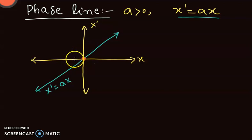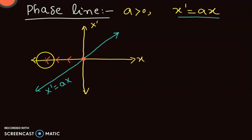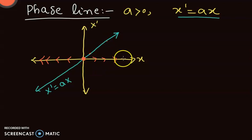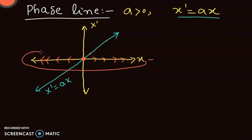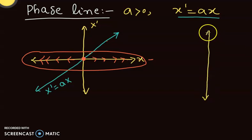If x is negative, then the slope is also negative, so the particle moves left. If x is positive, the particle moves towards the right. I will now show this line vertically, and that will be my phase line — if I see this x-axis line oriented vertically.